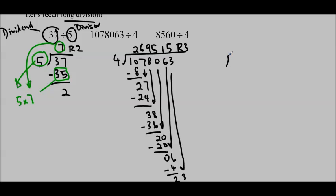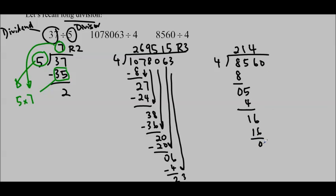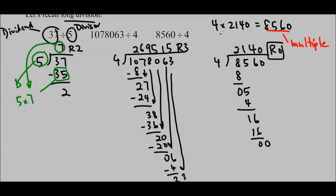This last one I just wanted to show you a short one to remind you of a term. 4 goes into 8 two times, right away. Subtract it off and keep going until we get to the end. At the end, I am multiplying by 0, so don't forget to put the 0 at the end. This ends up with a remainder of 0. That tells us that 4 times 2140 equals 8560, meaning 8560 is a multiple of 4, and both 4 and 2140 are factors of 8560.